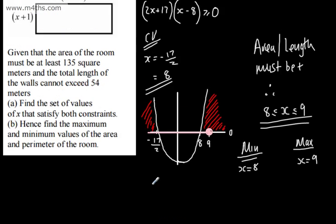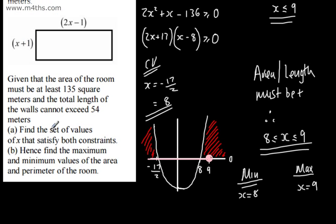If we look at substituting these in, the minimum value is going to be 135. If x is equal to 8, then this is going to be 15, and this is going to be 9. So the area is going to be 135, and the perimeter of the room is going to be 48. Put the units on: meters squared and meters.